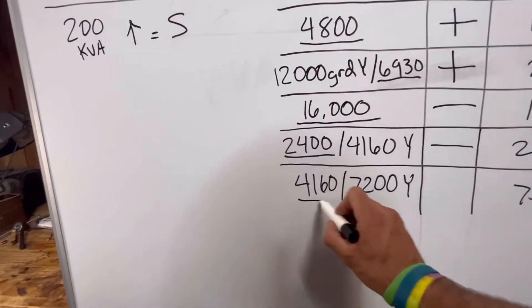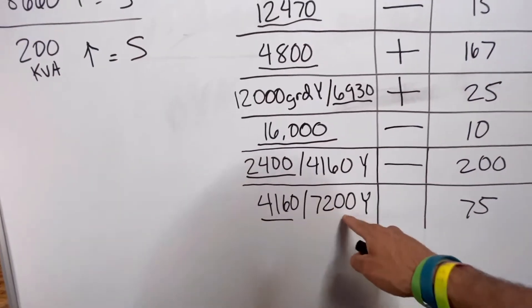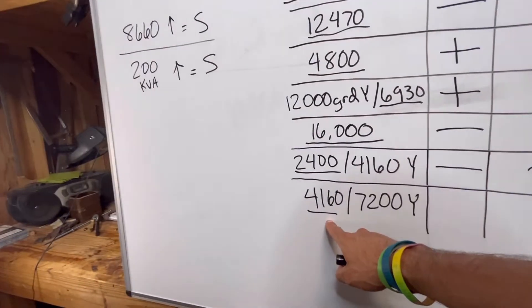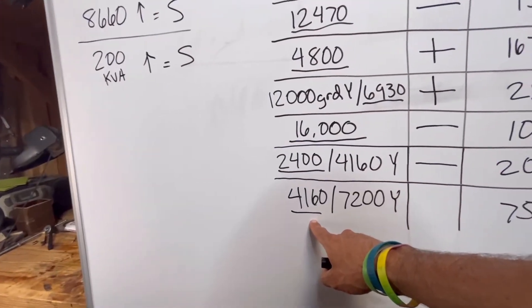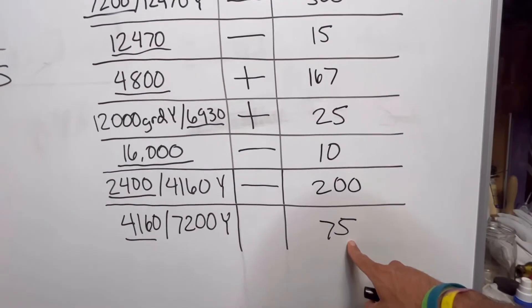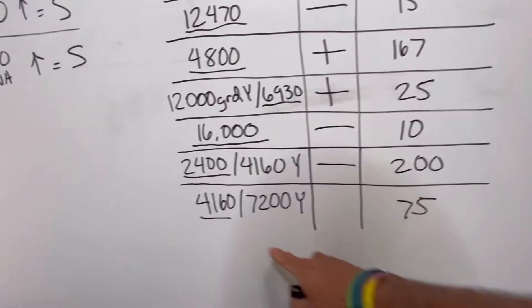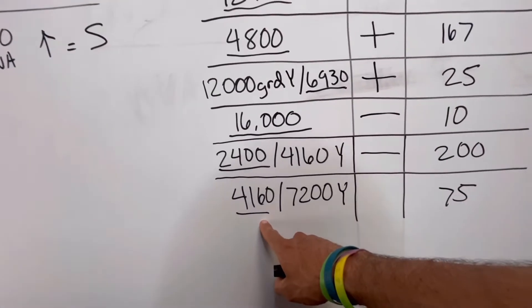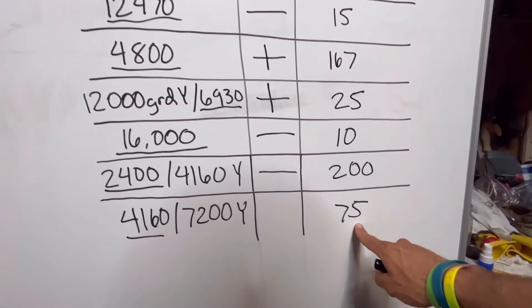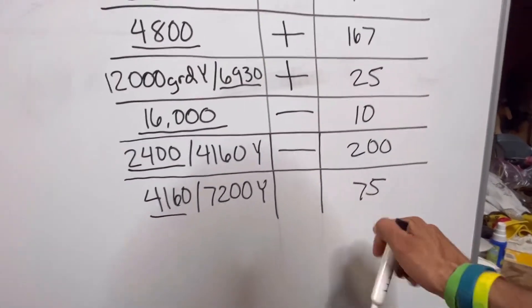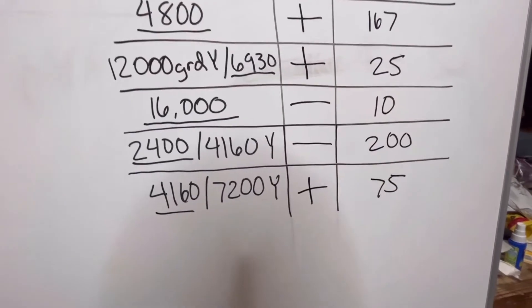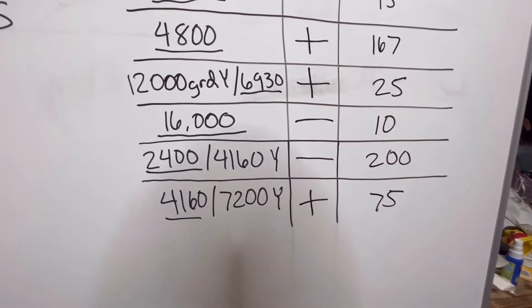And lastly, 4160/7200Y — 4160 primary input, 75 KVA. So I'm under 8660 and I'm under 200 KVA. Therefore, I'm automatically additive.